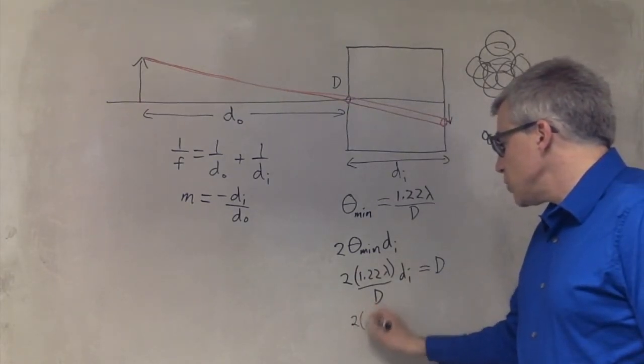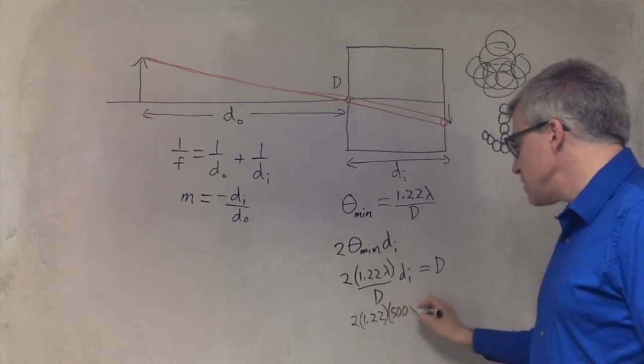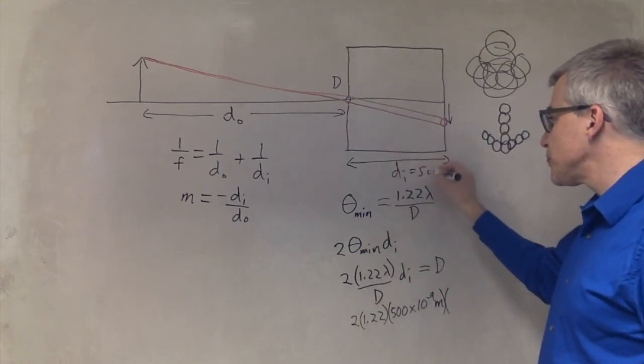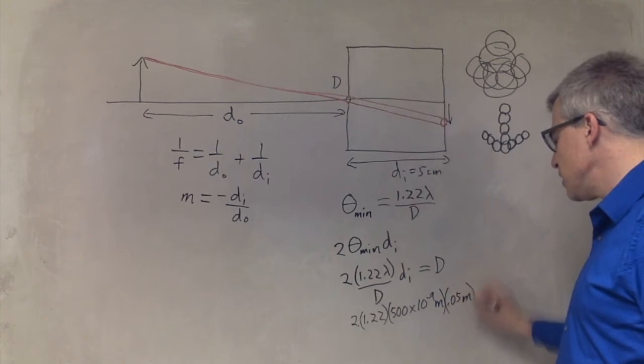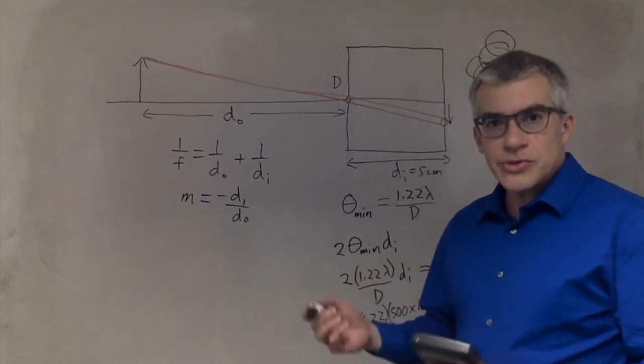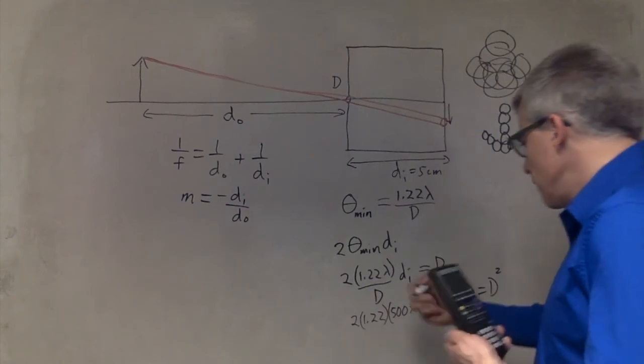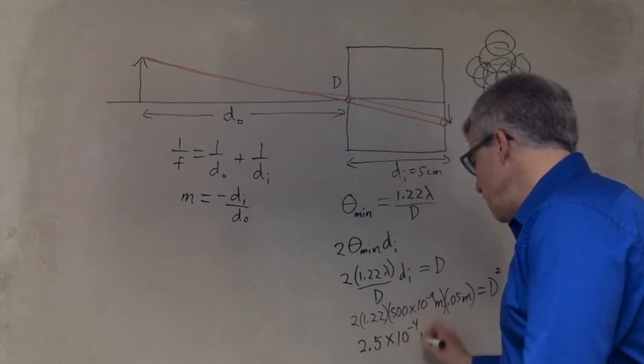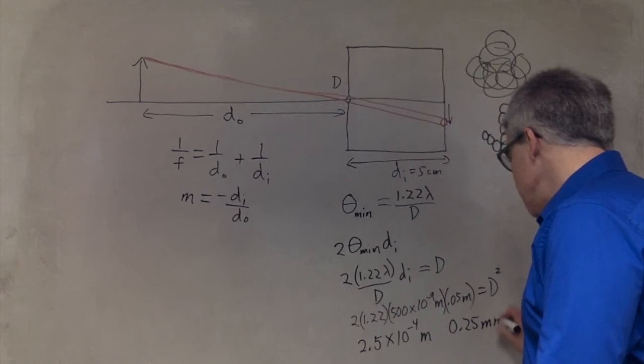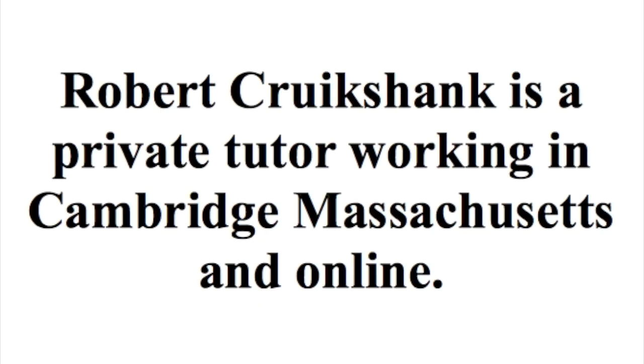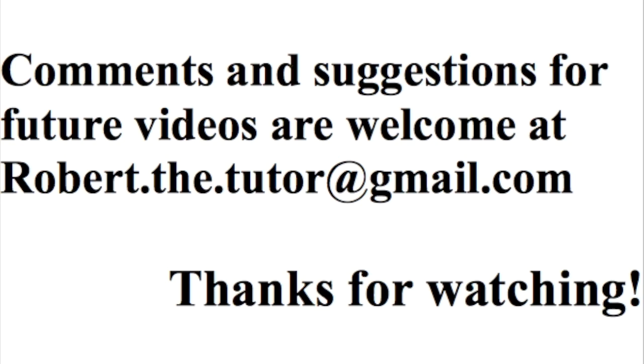So we would have 2 times 1.22 times 500 times 10 to the negative 9 meters times, let's call it 5 centimeters, 0.05 meters, is equal to d squared. So it turns out that if we solve this for d, the optimum is about 2.5 times 10 to the negative 4 meters, or 0.25 millimeters. That is the optimum diameter of the pinhole.